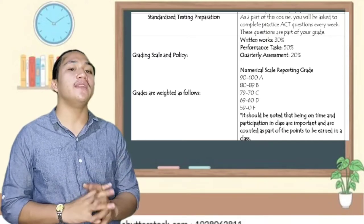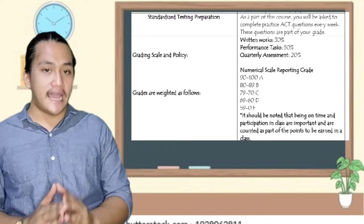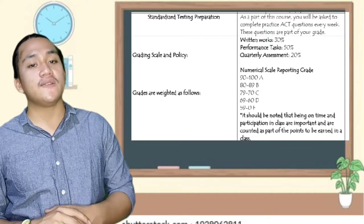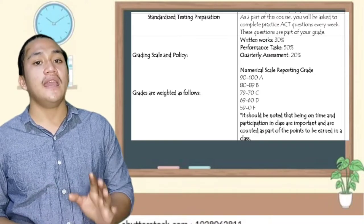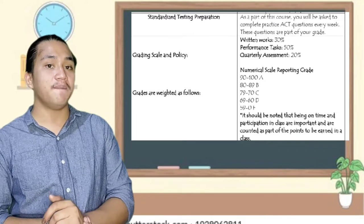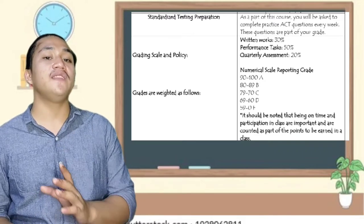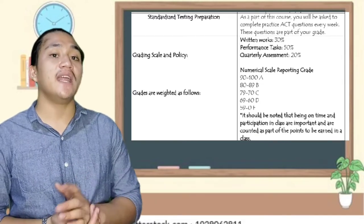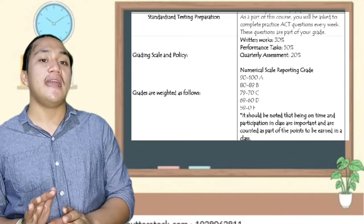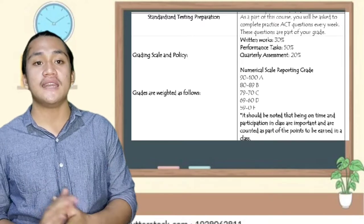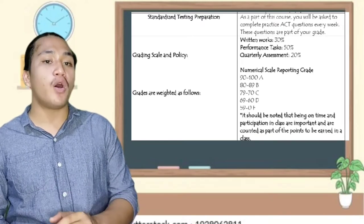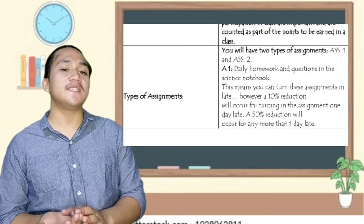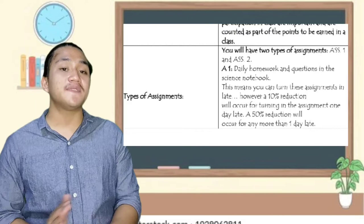90 to 100 is A, 80 to 89 is B, 79 to 70 is C, 69 to 60 is D, and 59 to 0 is F. It should be noted that being on time and participation in class are important and are counted as part of the points to be earned in a class. The types of assessment: you will have two types of assessments.